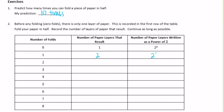Now it wants you to fold it again. With two folds you're going to have four layers, or 2 to the second power. Fold it again — that doubled again because we folded it in half, so the number of layers doubled. You'll have 8, which is 2 to the third power. If you fold it again, you'll have 16. Notice every time it's just doubling — times 2.